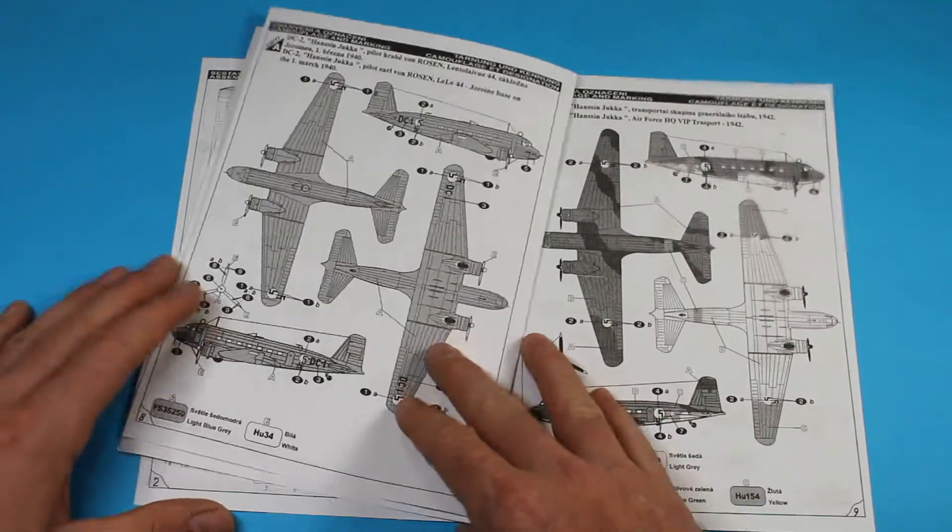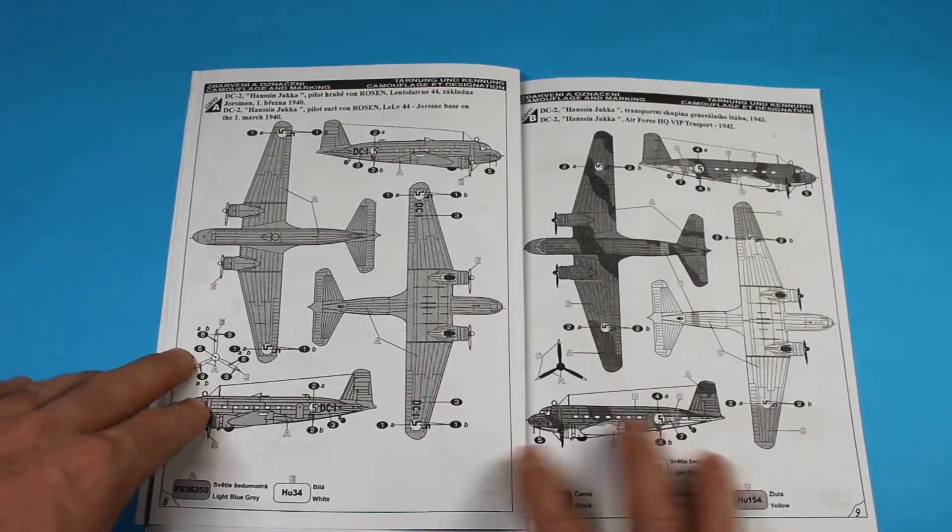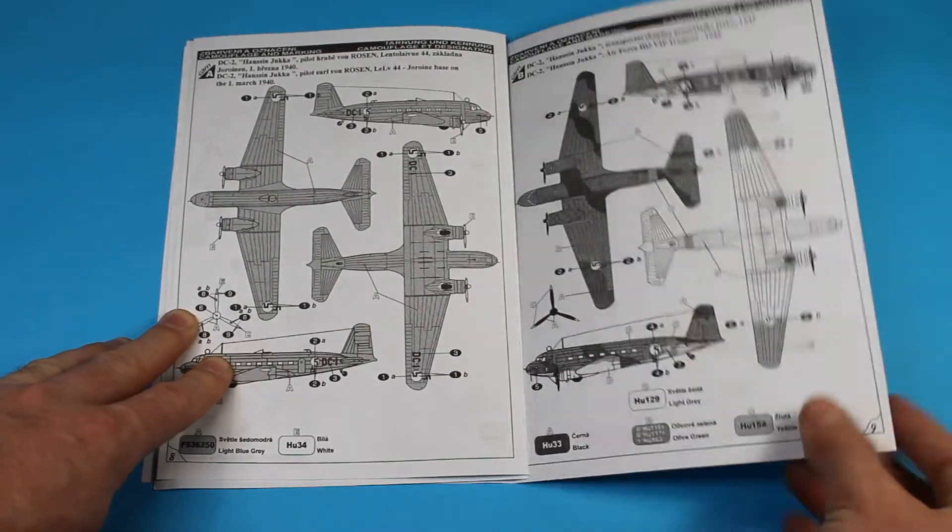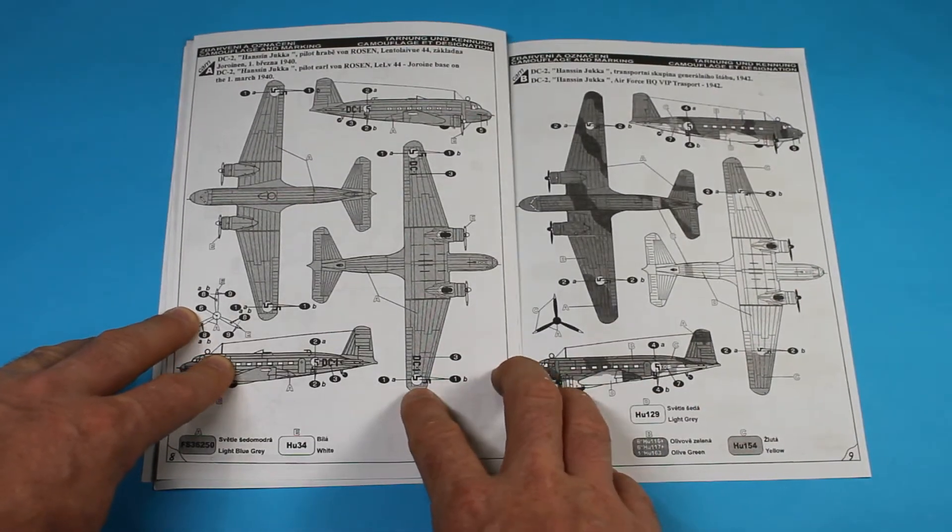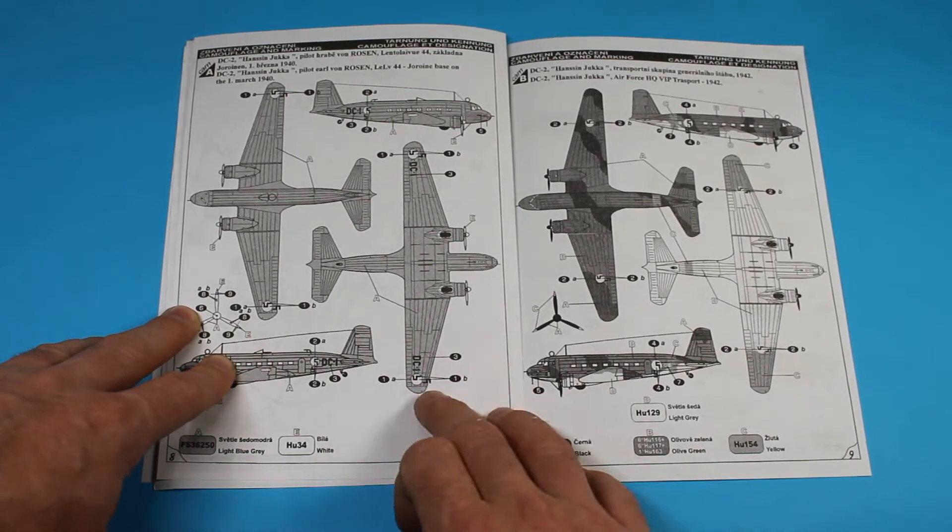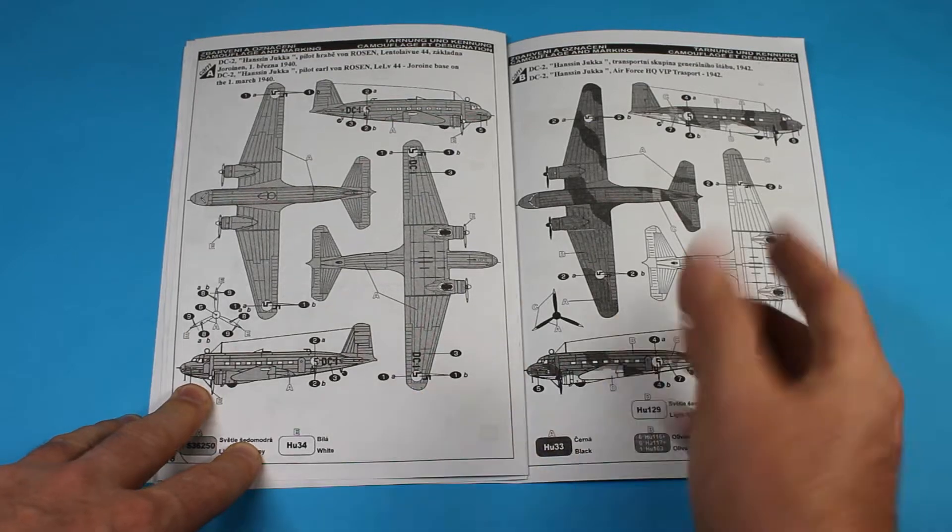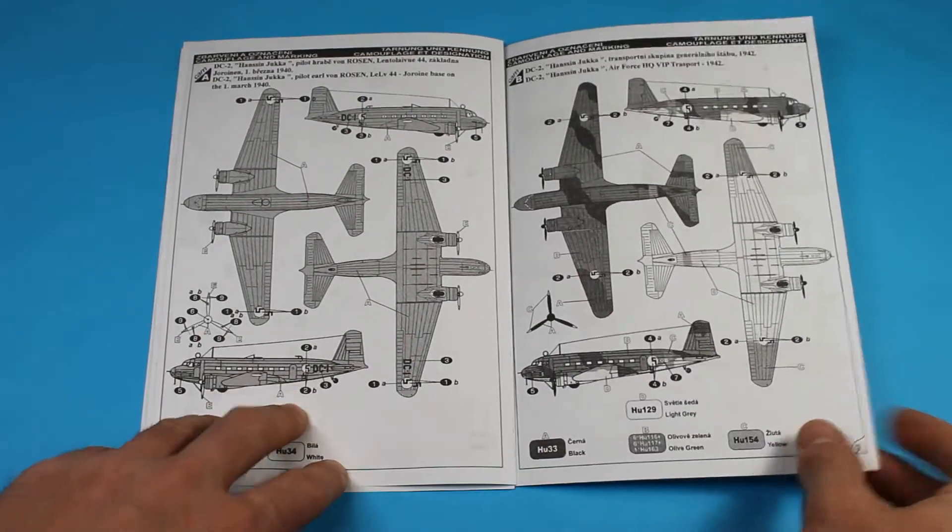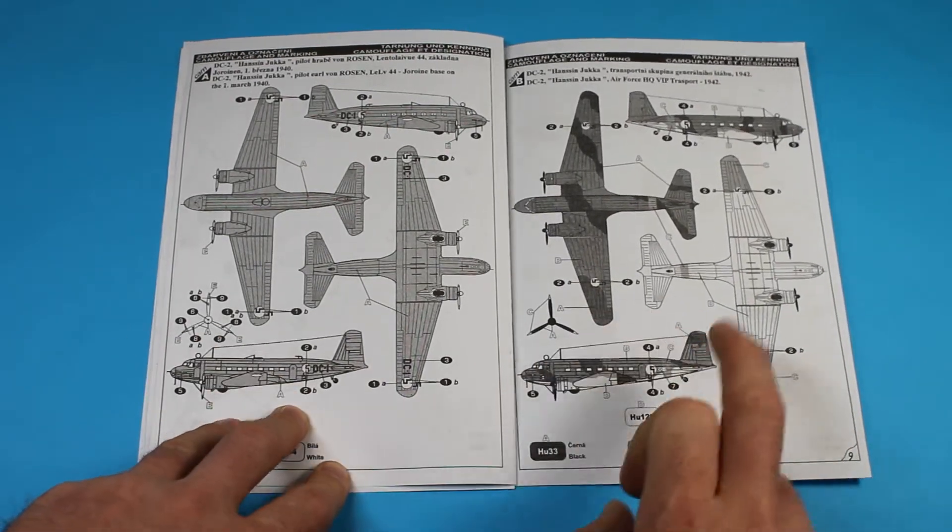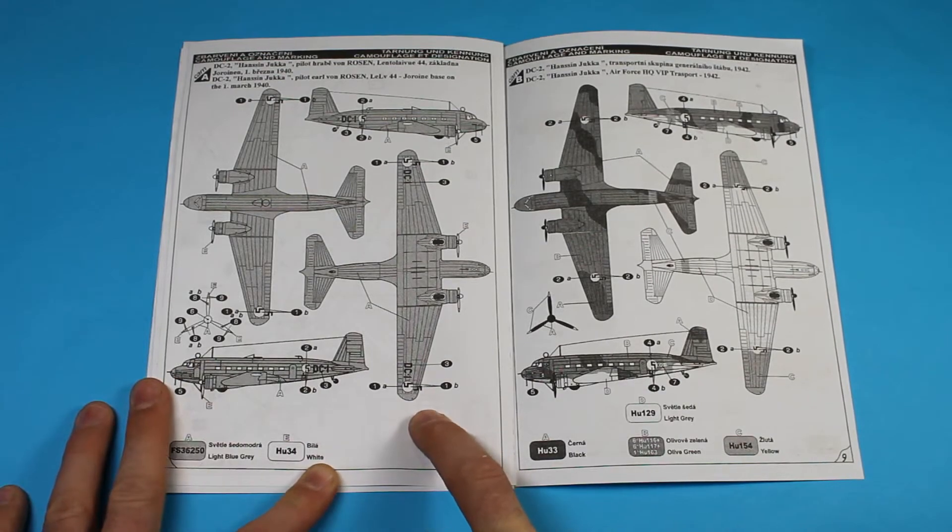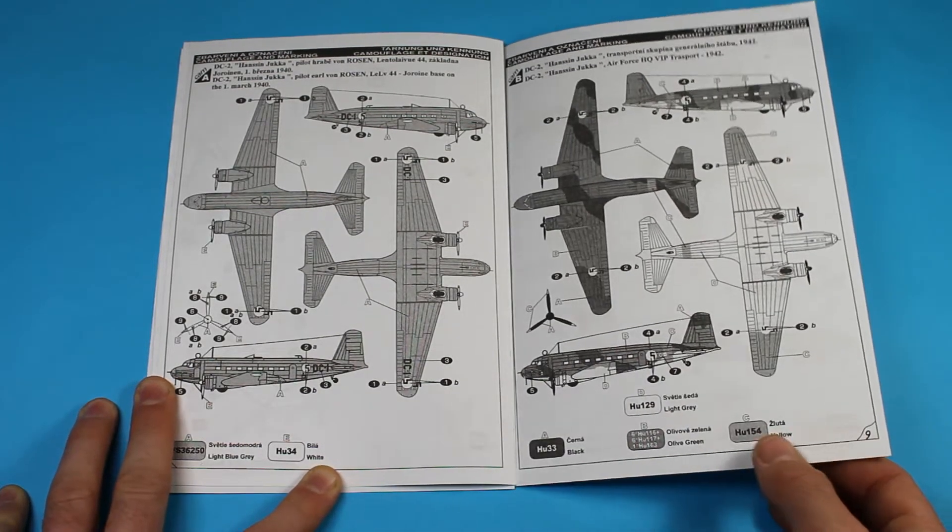Then we're into choosing the markings. You've got two Finnish options here. Both have included a Finnish swastika, which is the blue swastika. That is in two halves, being the Eastern European company. That's how they send these out.